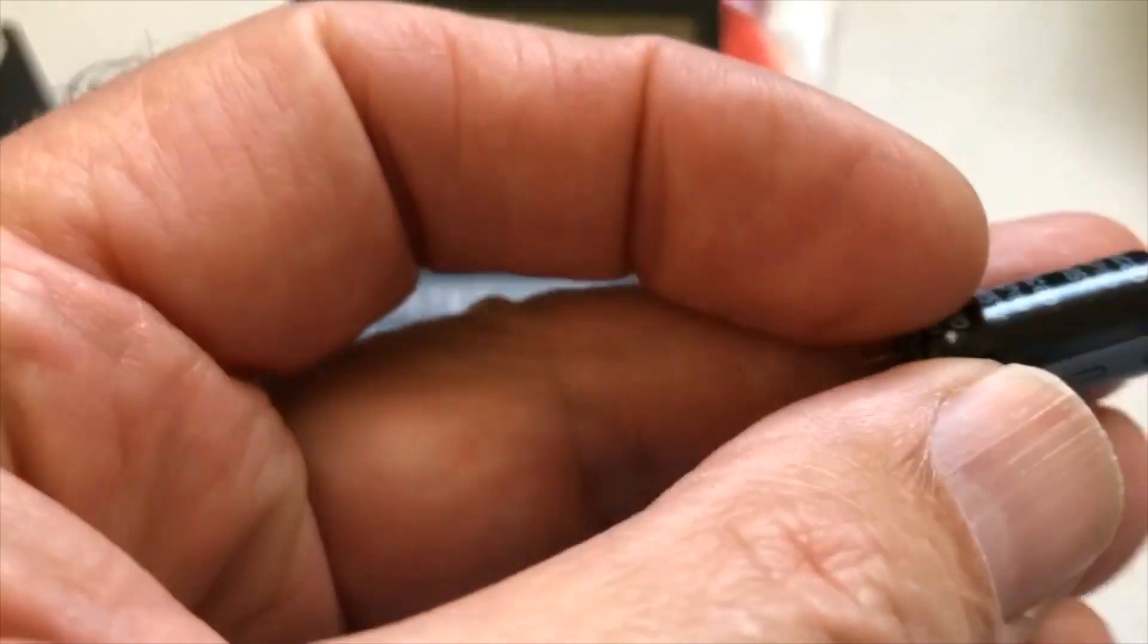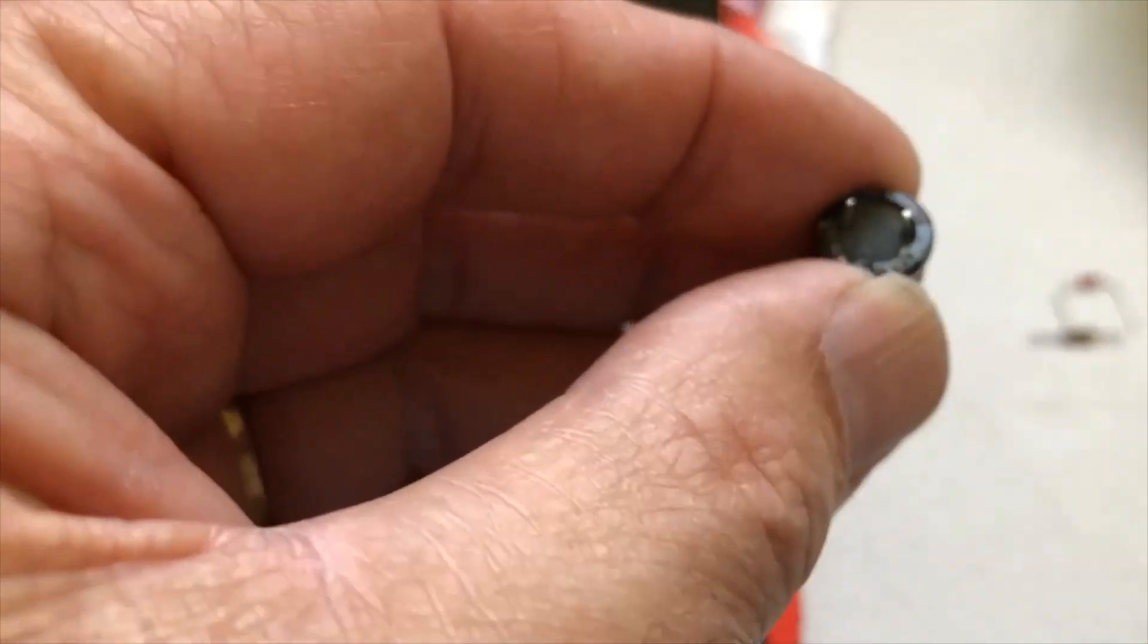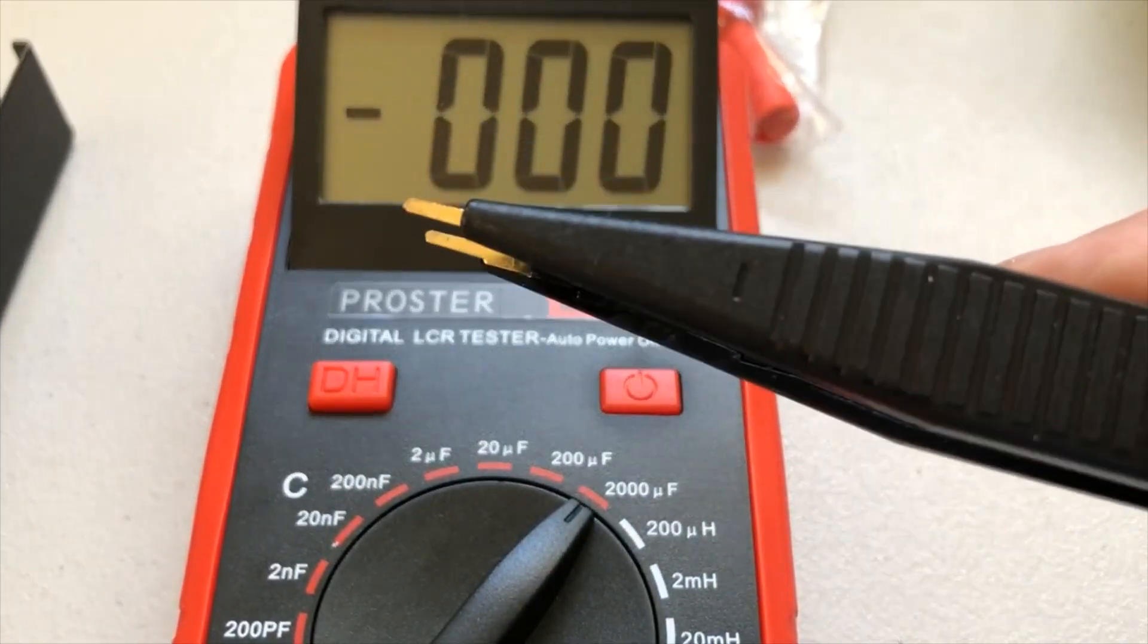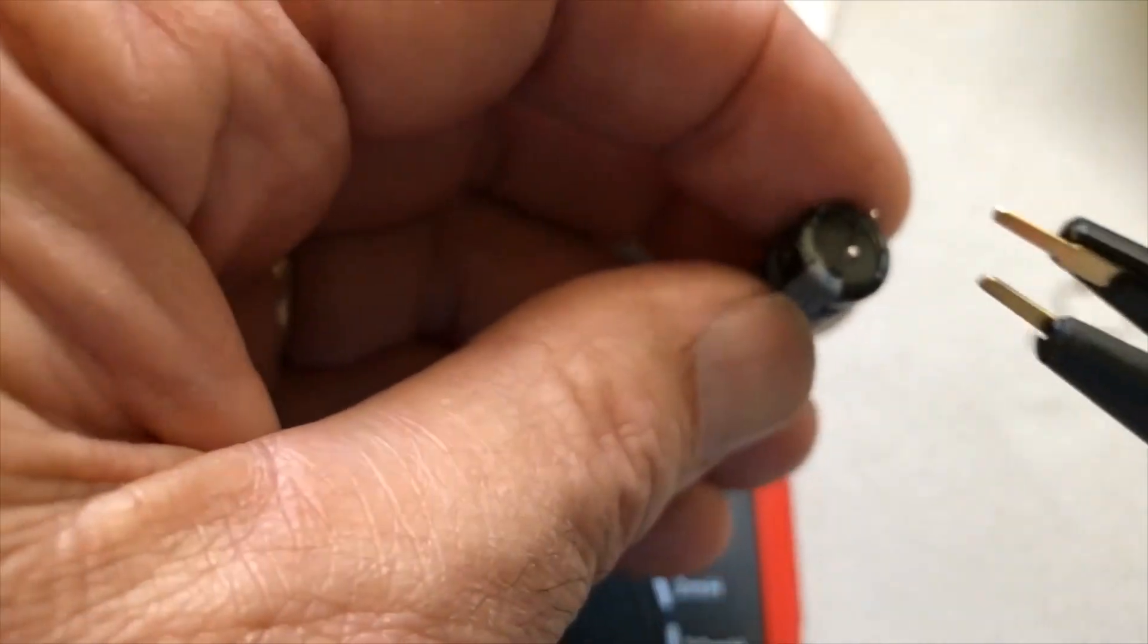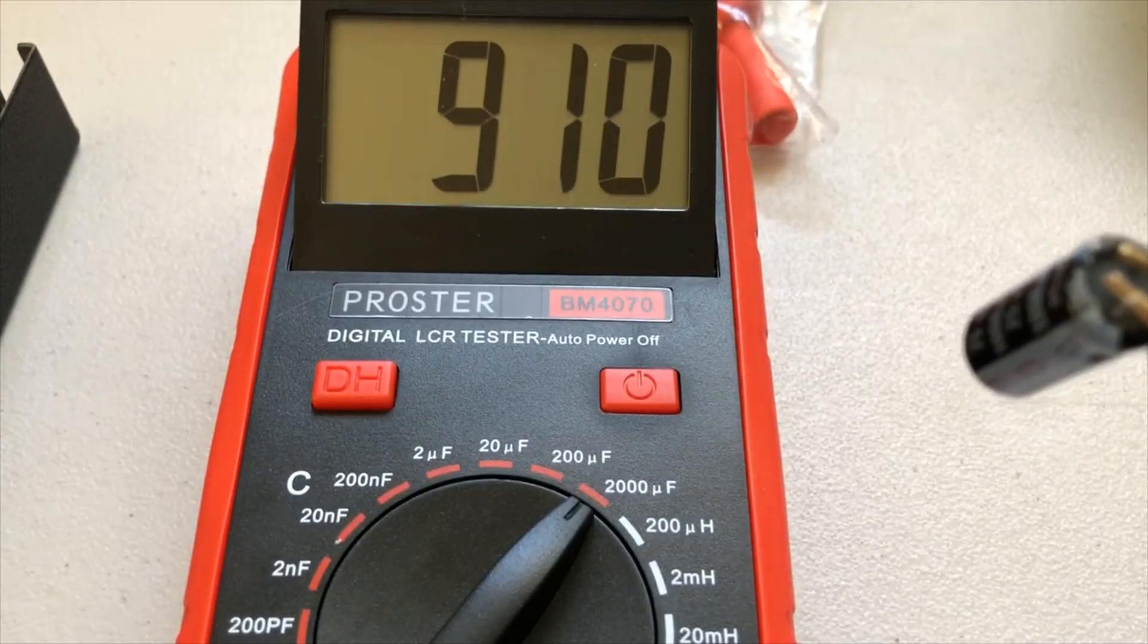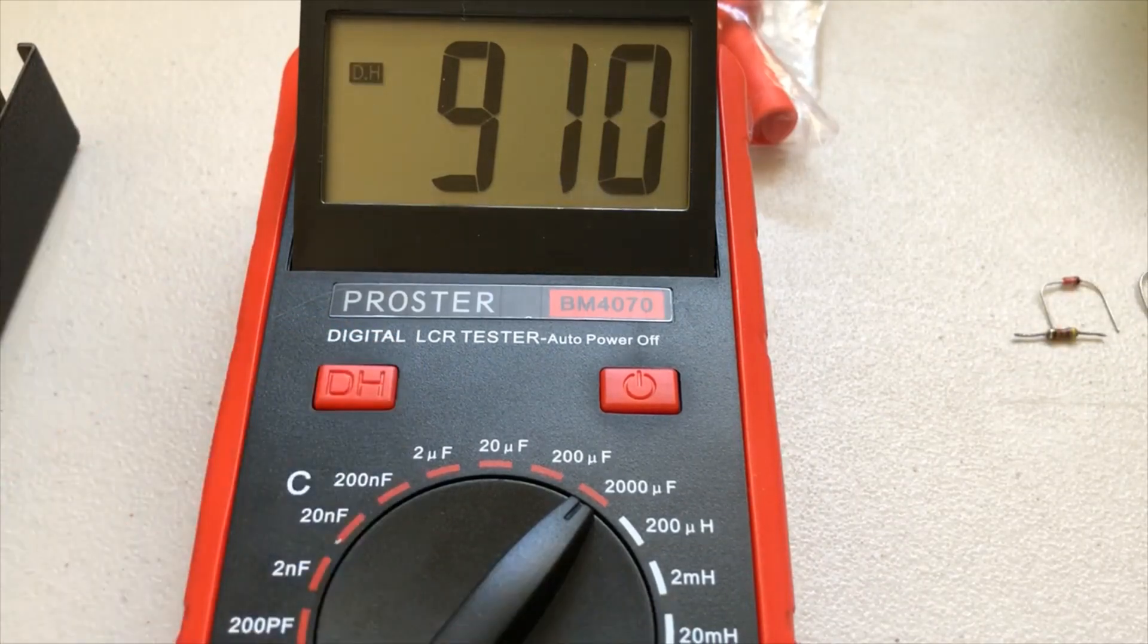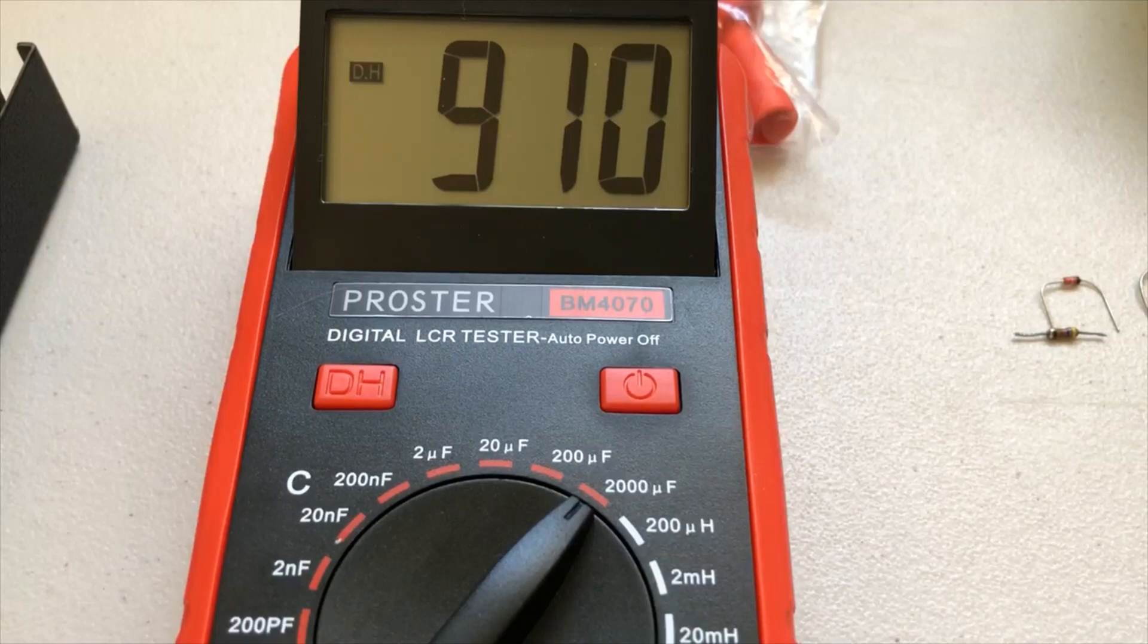On the capacitors here, you can see there's a negative and a positive side. The negative always has a color stripe down here. So that's how we know where the negative is. So we're going to take the negative and connect it there. Should be 1000 and it's 911. And I believe on the capacitors, if you're within 10%, you're okay, which that would be right around 9%. So that capacitor would be good.